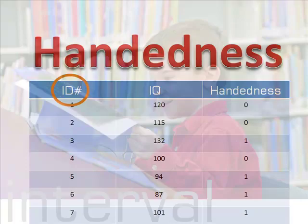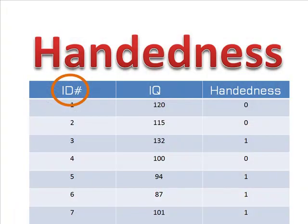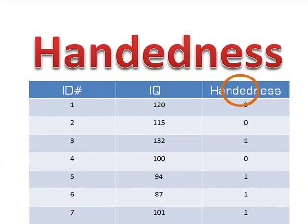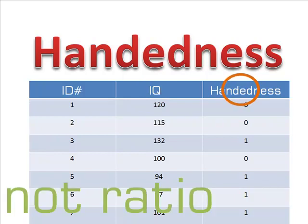Our ID number is at an ordinal level. IQ is at an interval level. What about handedness? Handedness was coded with ones and zeros. So zero doesn't mean lack of handedness. That rules out a ratio scale.